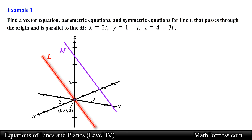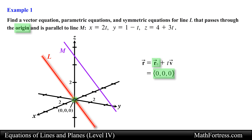In order to write the vector equation of line L, we need an initial point on the line and a vector that is parallel to line M. We already have an initial point since we are told that line L passes through the origin, so the position vector will be located at the origin, and as a result we have no components.